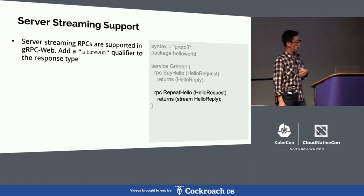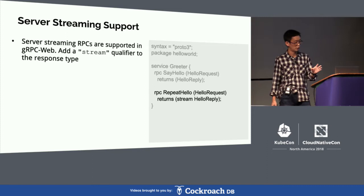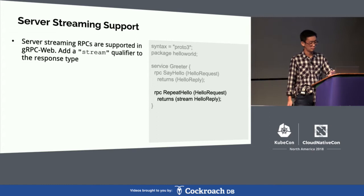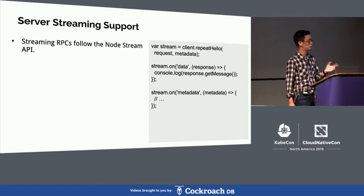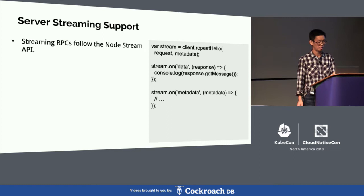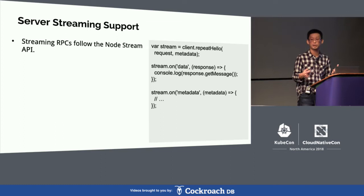Now we can add a streaming call. Let's say we call it repeatHello — you add a stream qualifier to the return side of the RPC definition for server-side streaming. Client streaming and bidirectional streaming are not supported right now. The API for streaming follows the standard Node stream API. You start the call by calling repeatHello, you get a stream back, and on that stream you can put callbacks to get errors, data, metadata, and statuses back.